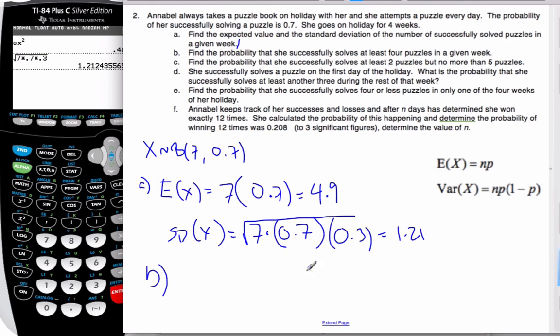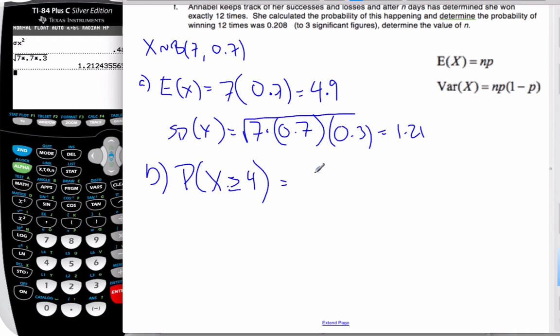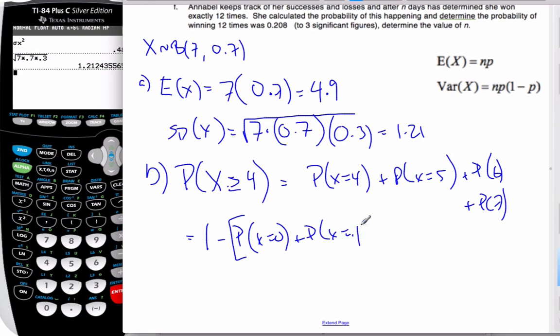Okay, B part now. It says, find the probability that she successfully solves at least four puzzles in a given week. So now I want to find the probability that X is at least four, bigger than or equal to four. So if I think about it, that means I want to find the probability that she does four plus the probability that she does five plus the sixth one plus the seventh one and add them all up. I could also do one minus the probability of no puzzles and one puzzle, two puzzles and three puzzles.